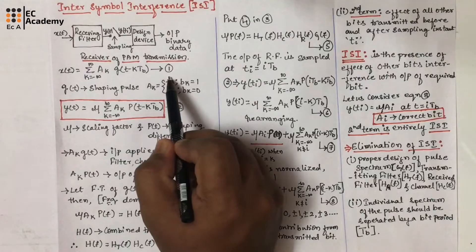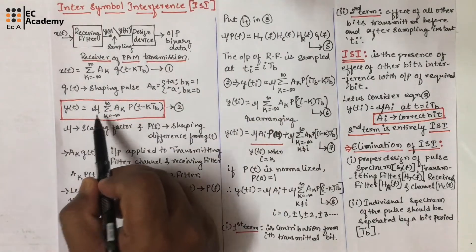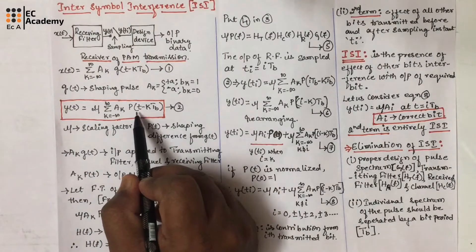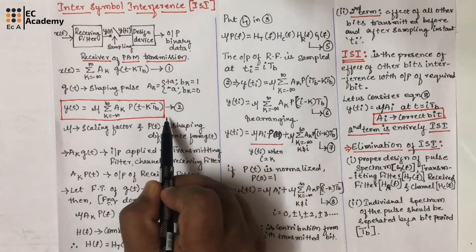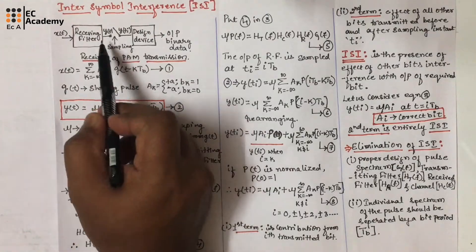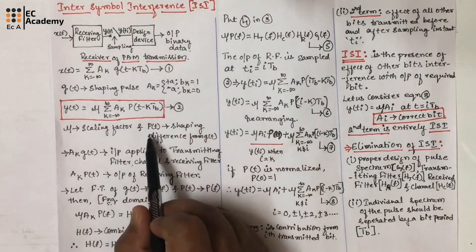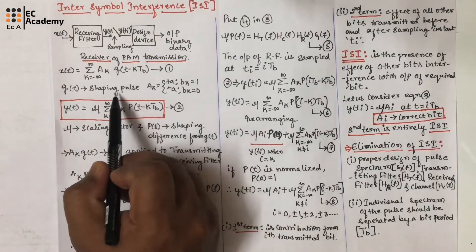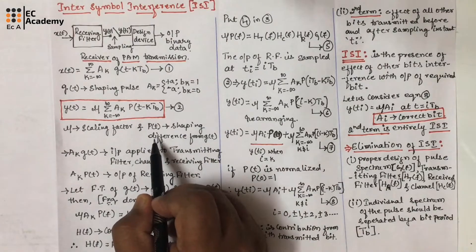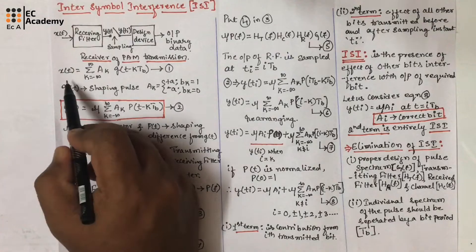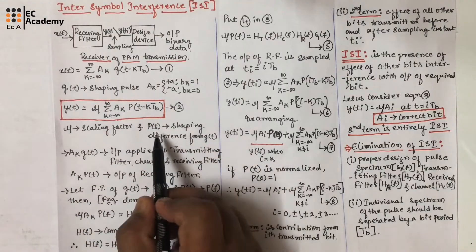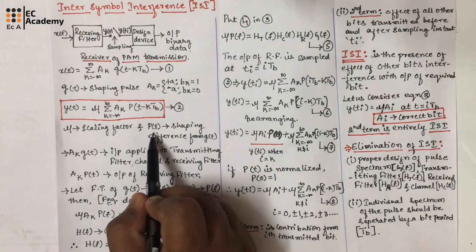Let us take that as equation number 1. The signal Y(t) can be represented as μ · summation from k = -∞ to ∞ of a_k · p(t − k·T_b), which is equation number 2. Here μ represents the scaling factor from the receiving filter, and p(t) represents a shaping difference from g(t). Since y(t) is a noisy version of x(t), there will be a shaping difference between p(t) and g(t), which is represented by p(t).